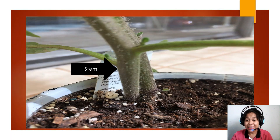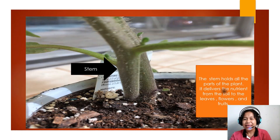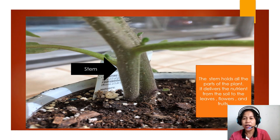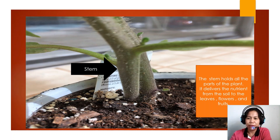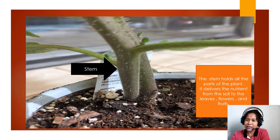The stem. The stem holds all the parts of the plant. It delivers the nutrients from the soil to the leaves, flowers, and fruits.